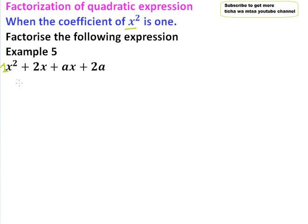This is simpler because the middle term has already been expanded. We look for the common terms there, and the common term is x, so we factor out x, and we're left with x plus 2.